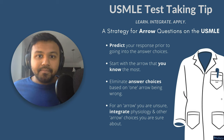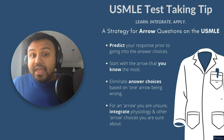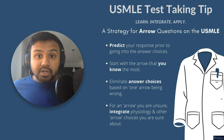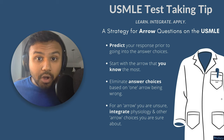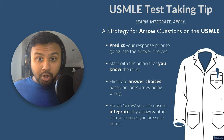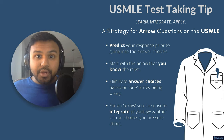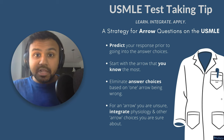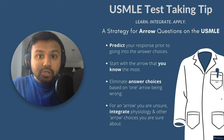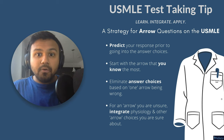The second step is going to be starting with the arrow that you know the most. For example, if I give you an up-down arrow question about heart failure, in heart failure you know that cardiac output is going to be low. So start with the parameter that you know the most.